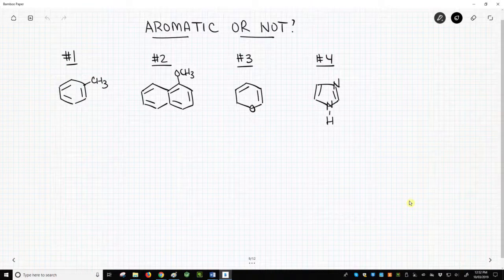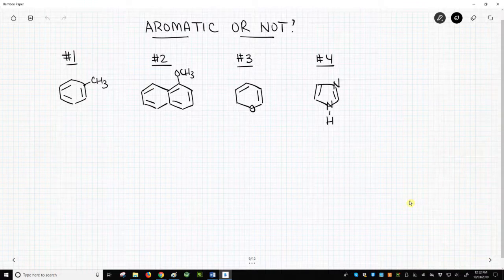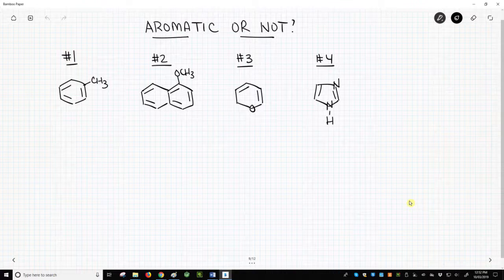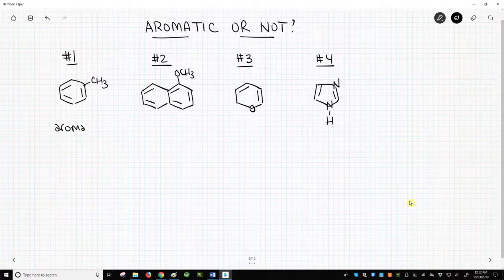Example 1 – toluene. We have a flat ring with atoms that have p orbitals with six total electrons. It's just like benzene. Yes, toluene is aromatic.